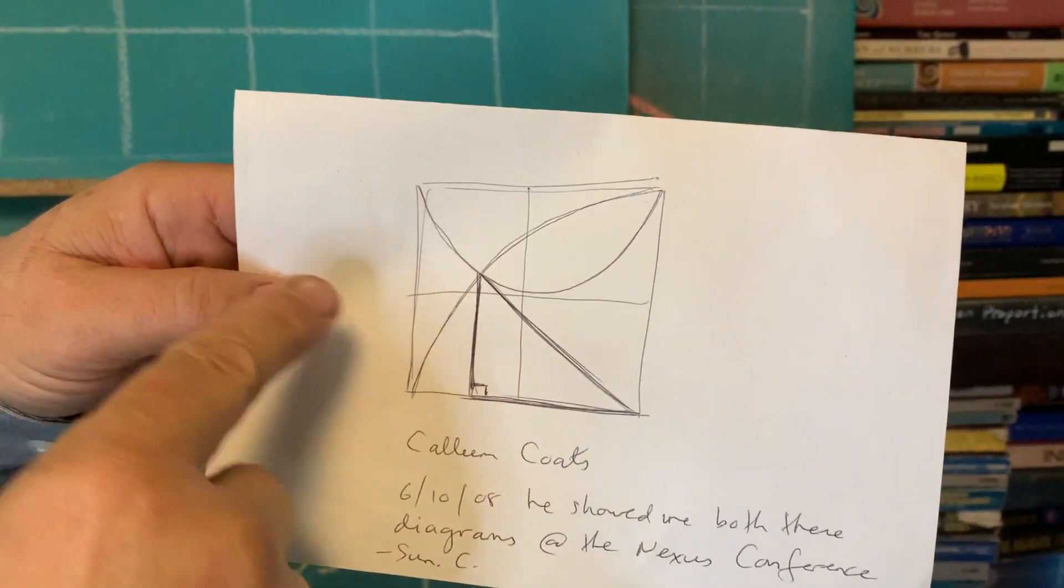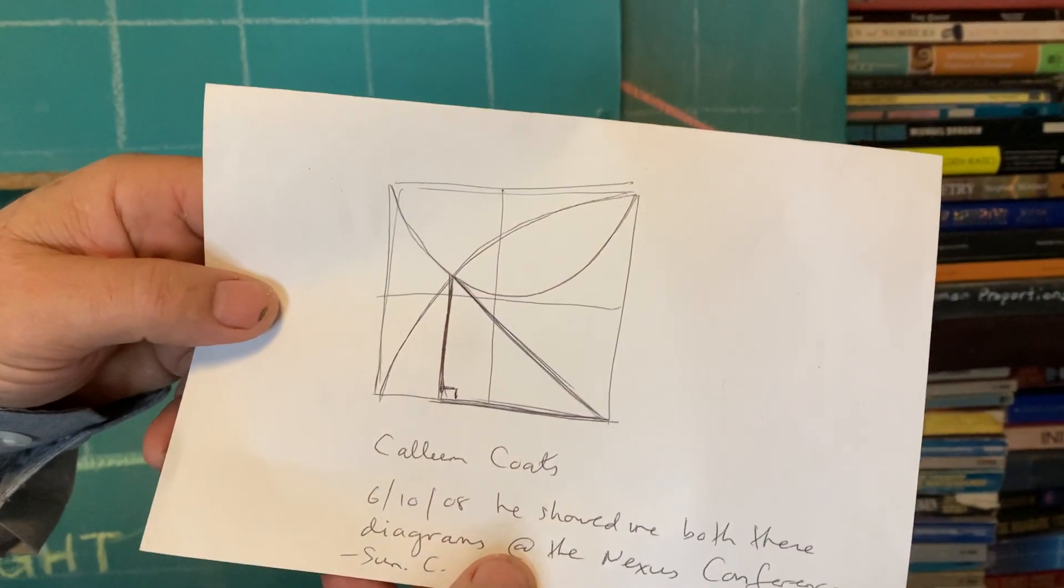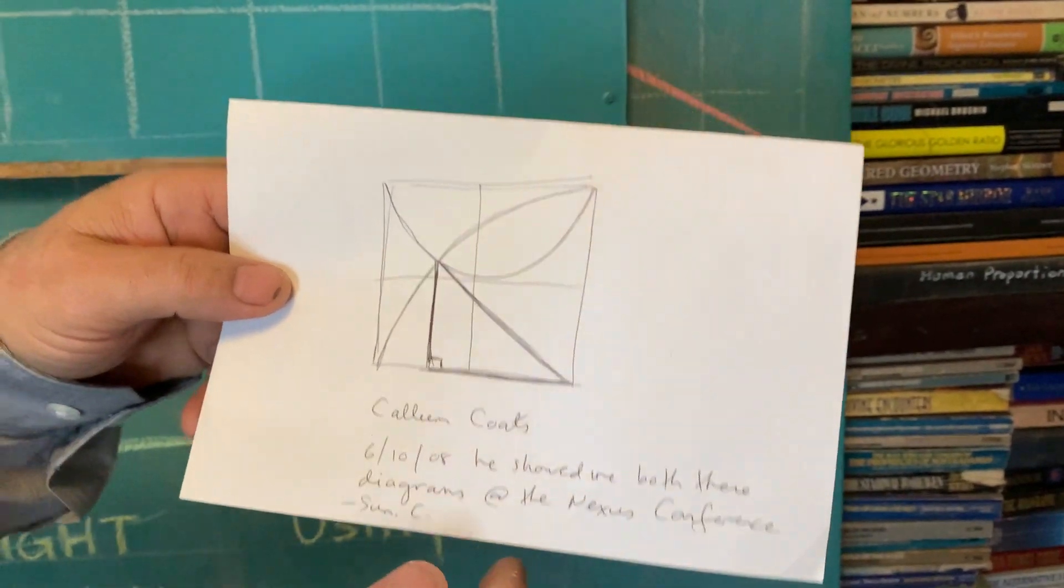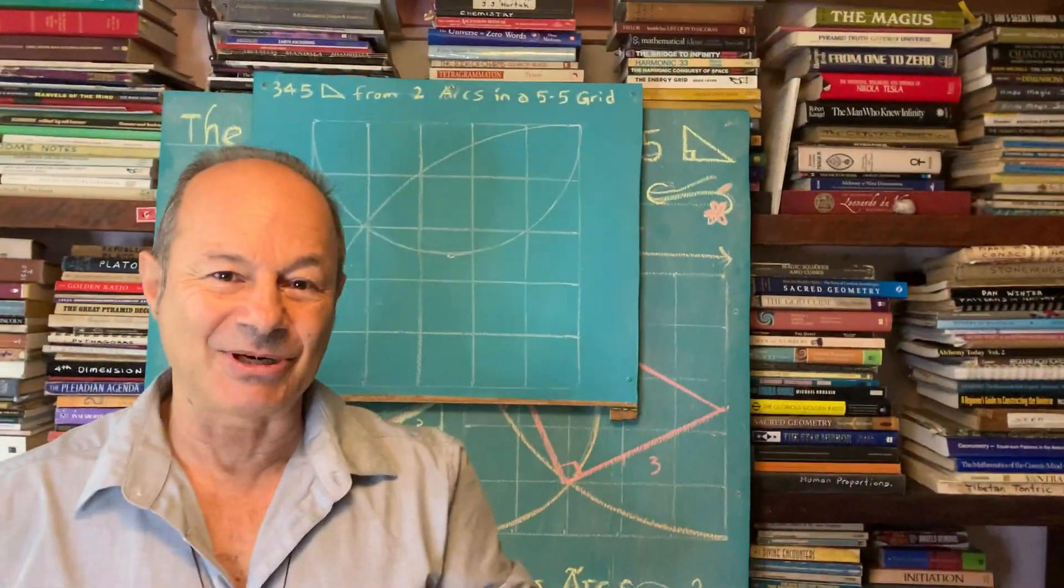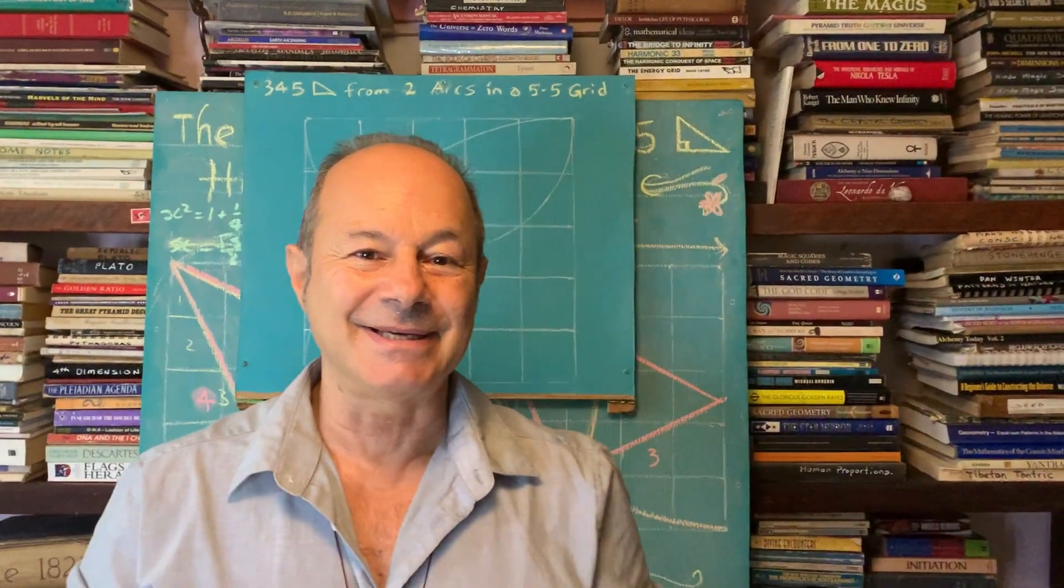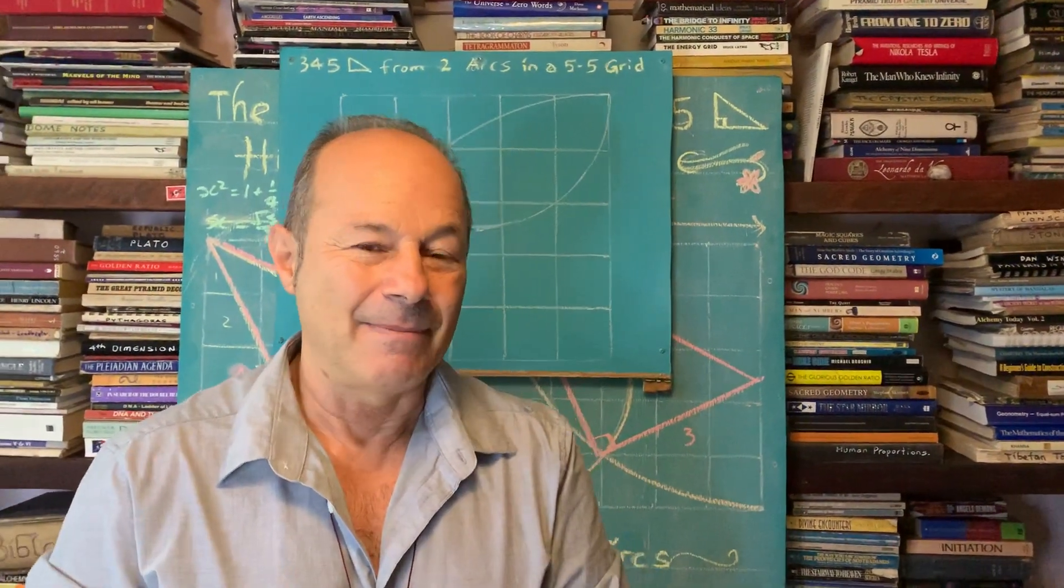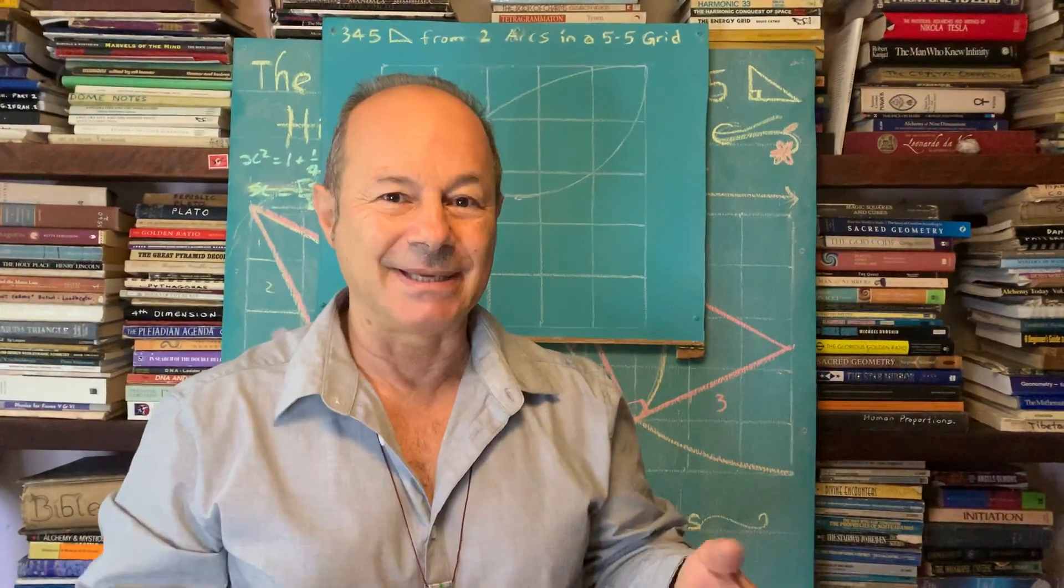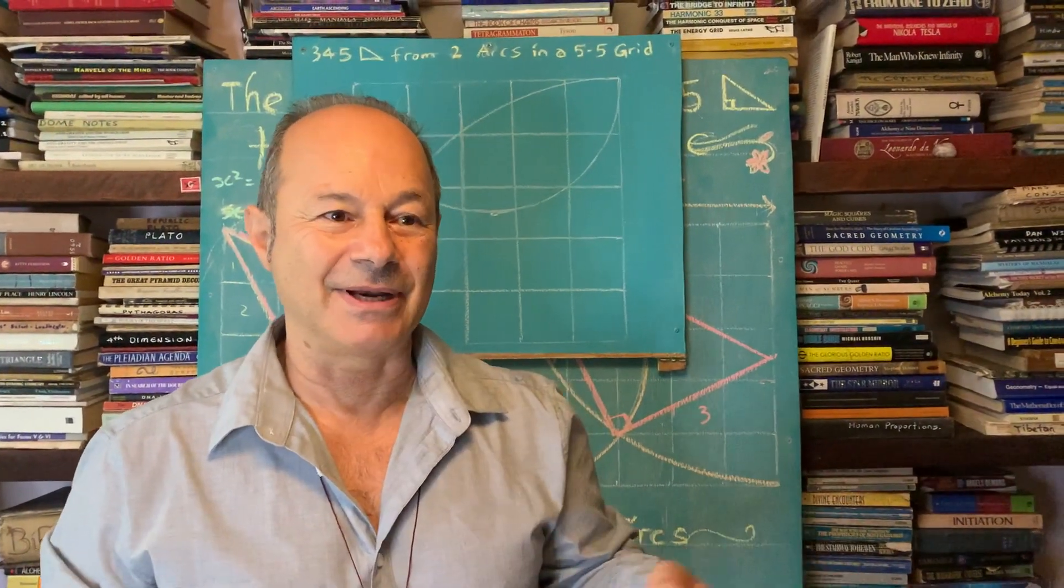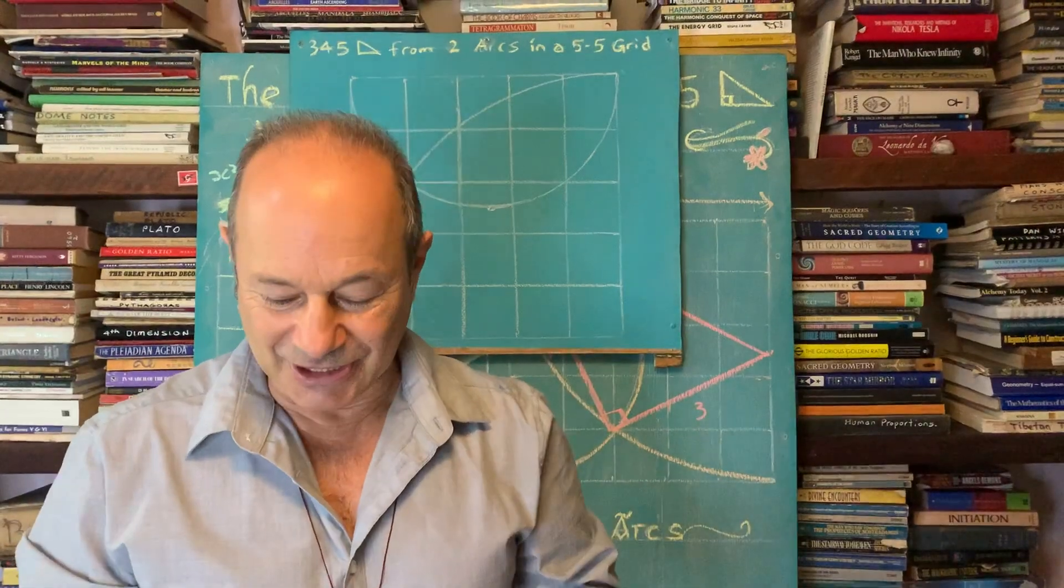He says, 'Jane, look, here's a better way to create the 3-4-5 triangle with two arcs of the circle.' This actually wasn't a 5x5 grid, this was just like a 1x1 grid. I'm going to show you what Callum did. I really love this because that diagram I just showed you doesn't exist anywhere. I've spent a long time trying to find this on the internet - doesn't exist.